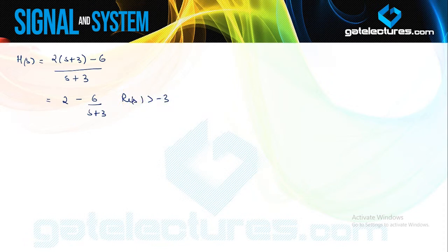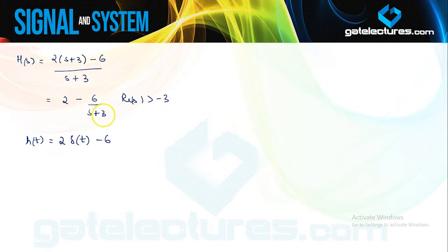Now if you perform the inverse Laplace transformation for this function, the inverse Laplace of 2 is going to be 2δ(t), and the inverse Laplace of 6/(s+3) is going to be 6e^(-3t)u(t), since this was a right-handed signal. So I am going to obtain h(t) = 2δ(t) - 6e^(-3t)u(t).